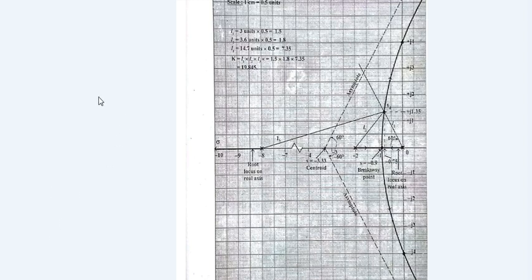If both ζ and ωn are given, we can find SD directly. If only the damping ratio ζ is given, we use the relation cos θ = ζ, so θ = cos⁻¹(ζ). From the root locus of the uncompensated system, we compute θ = cos⁻¹(ζ).